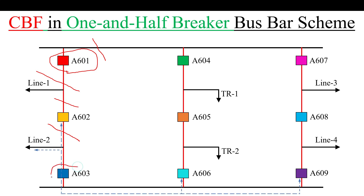For A603 failure, tripping will be extended to both sides — to A602 and to Line 2 on one side, and to A606 and A609 on the right side.